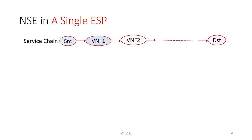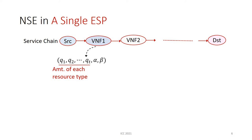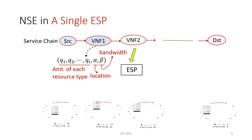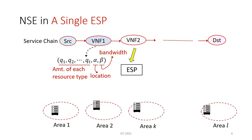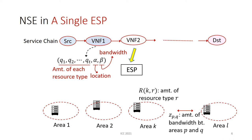Now let's look at NSE in a single ESP. For any service chain, we have a descriptor for each VNF in the chain, which describes the amount of each resource type demanded, the location desired, and the amount of bandwidth required. When a request comes into the ESP, the ESP looks for suitable servers to place each VNF and link them together. For that, the ESP has information about the amount of each resource type in each server and the amount of bandwidth between any pair of servers.